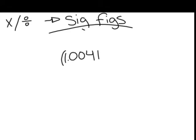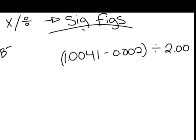Let's say you have 1.0041 minus 0.002, all divided by 2.00. Well, you'd follow your same BEDMAS rules, or PEDMAS rules, if you learned it that way. You'd start with inside your brackets.